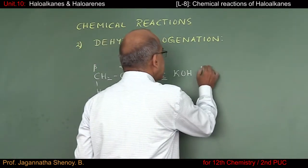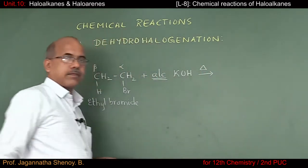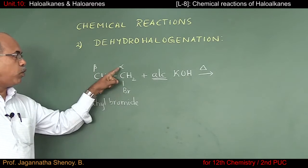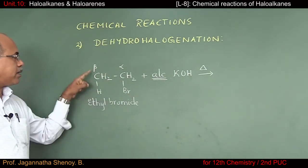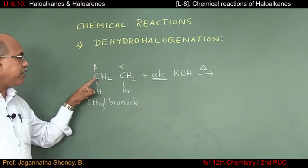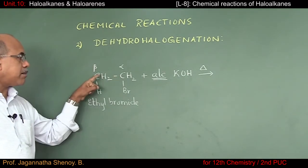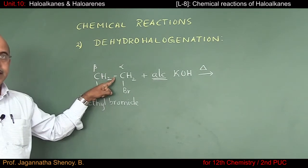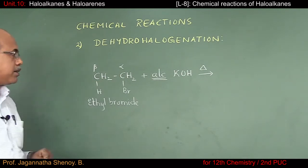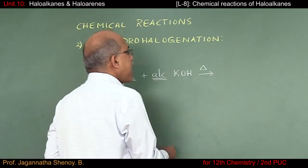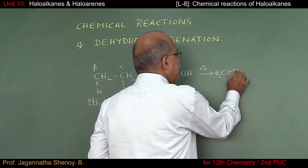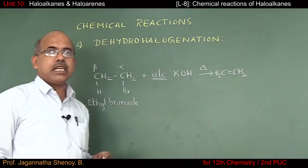The reaction condition is that I have to heat it. What happens is the halogen atom gets removed from the alpha carbon atom, and between the alpha and beta carbon atoms a double bond gets introduced to maintain the tetravalency of both atoms. The major product obtained is CH2=CH2, which is ethene. HBr formed is acidic; a neutralization reaction takes place between HBr and KOH, forming potassium bromide and water.